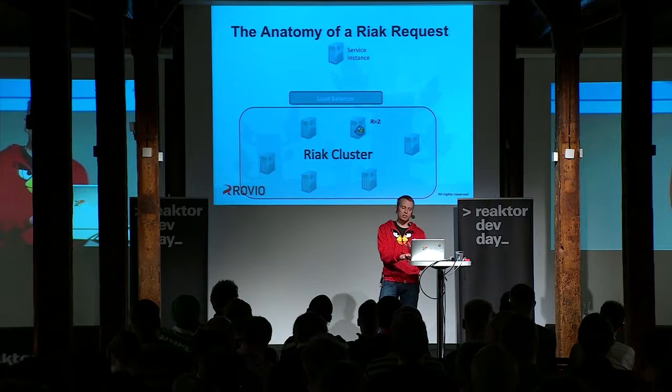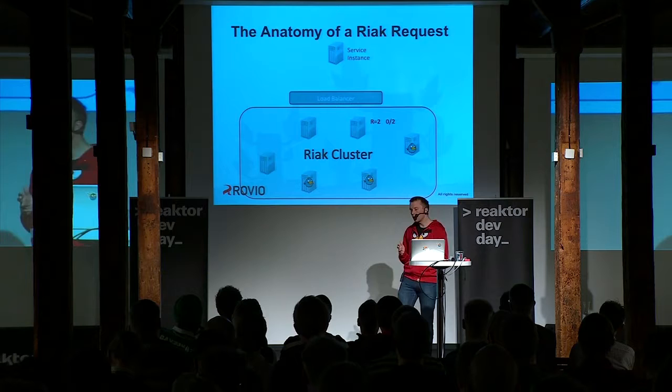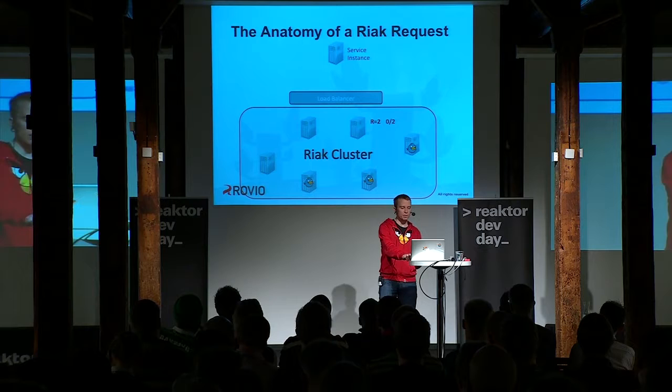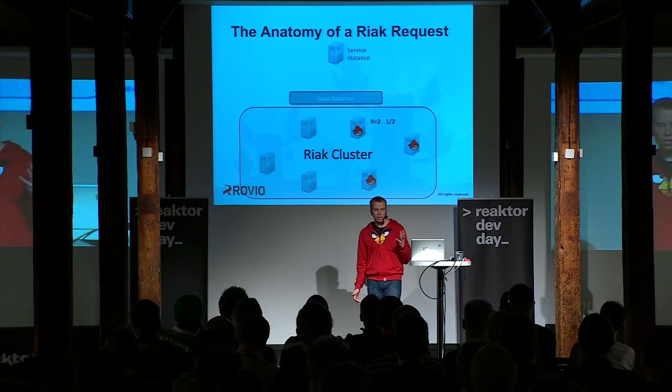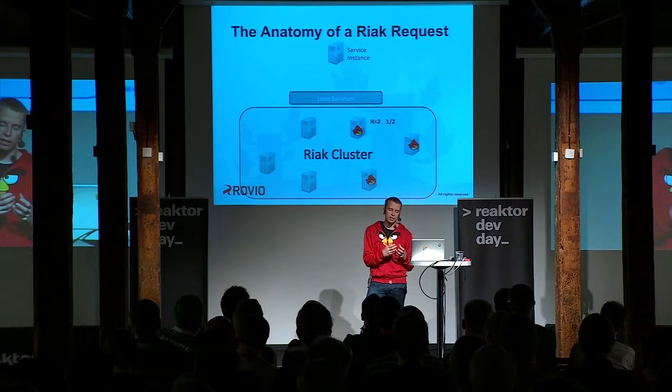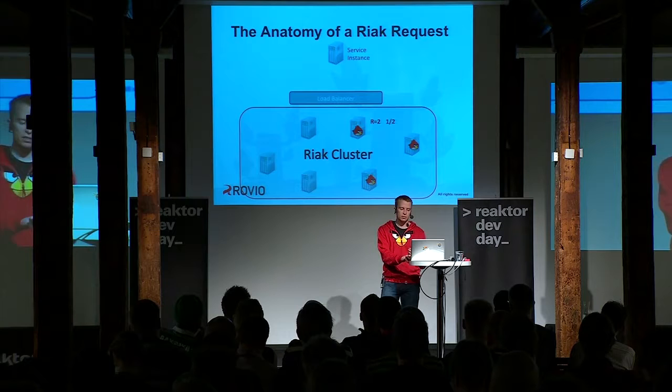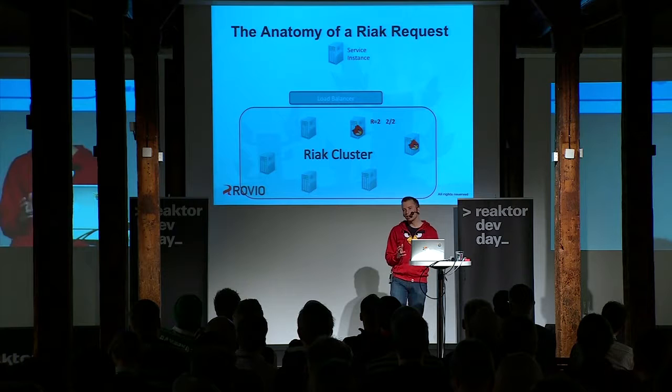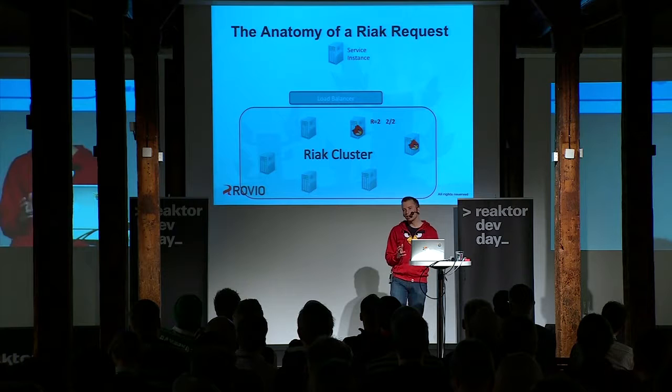The coordinator is expecting two responses. The first node responds, but the coordinator doesn't return data yet because it doesn't have the second copy. The second node responds, and now the coordinator is happy and returns the data. We didn't wait for all three — we got the two copies we wanted. The slowest or last node might have been down; it doesn't really matter. That's what brings us the fault tolerance.